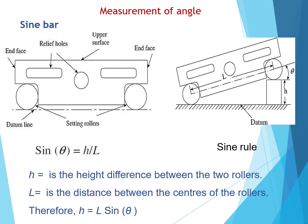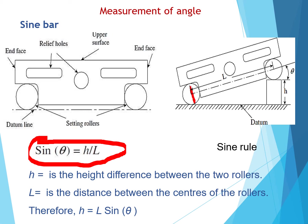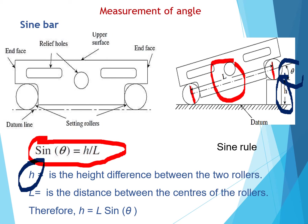To measure the angle, one end of the sine bar is lifted by some height. The sine of that angle is given by: sine theta equals H divided by L, where H is the height — the difference in level between the two rollers — and L is the distance between the centers of the rollers. The angle theta is what we are going to find out.